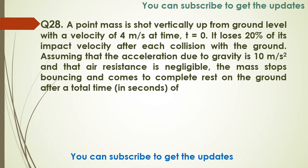This is a two-mark question — you have three to four minutes maximum for solving. Let me read the next question. A point mass is shot vertically up from ground level with a velocity of 4 meters per second at time t = 0. It loses 20% of its impact velocity after each collision with the ground. Assuming g = 10 m/s² and air resistance is negligible, the mass stops bouncing and comes to complete rest after a total time of: Option A: 1s, B: 2s, C: 4s, D: infinity.